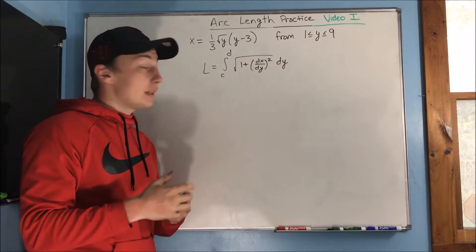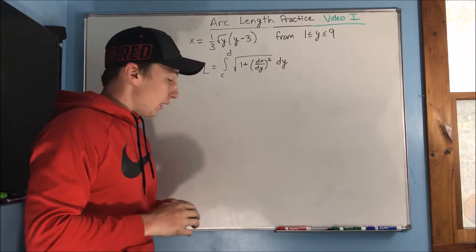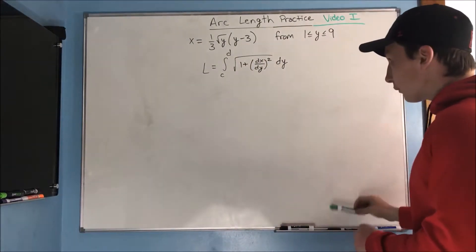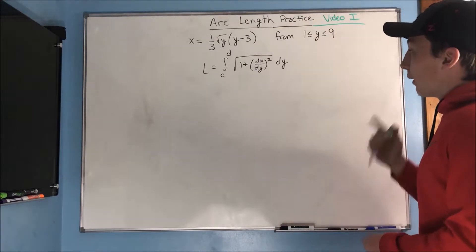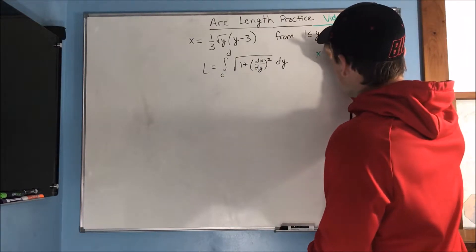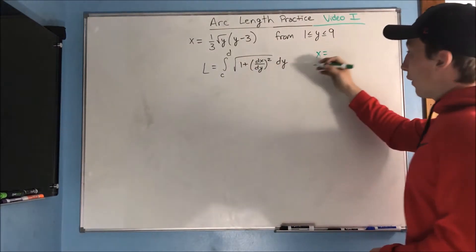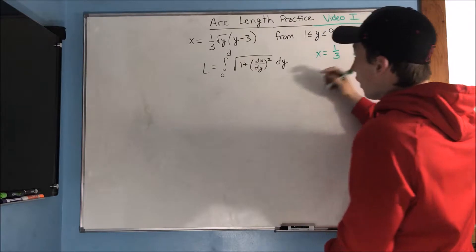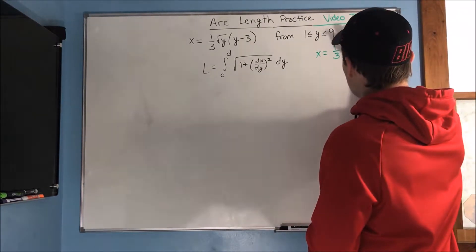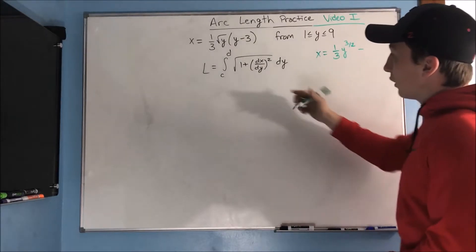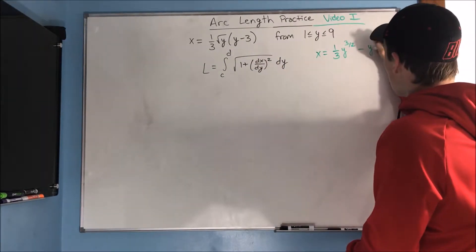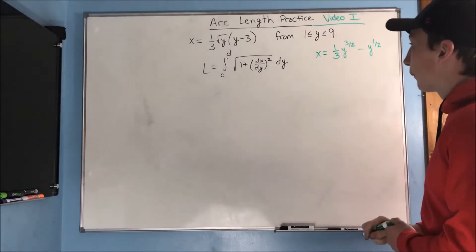So now we need to find dx dy, and this will not be as clean as the first one. What is our x? Well, we can simplify our x to be 1 third y to the 3 halves minus, distribute this here, we just get rad y, so y to the 1 half.